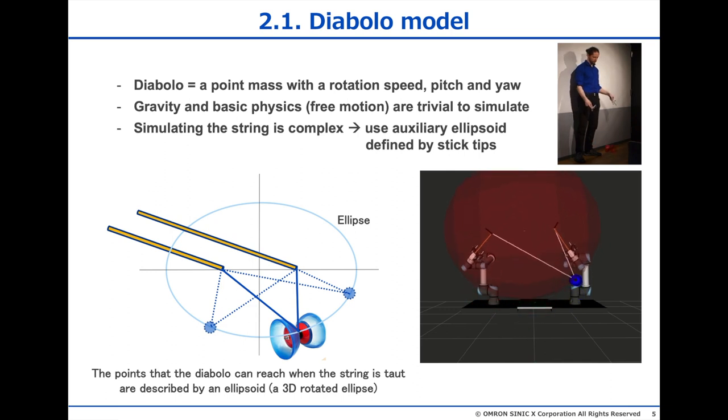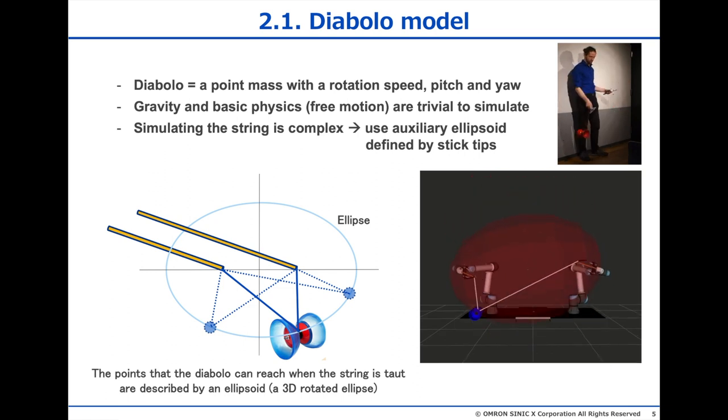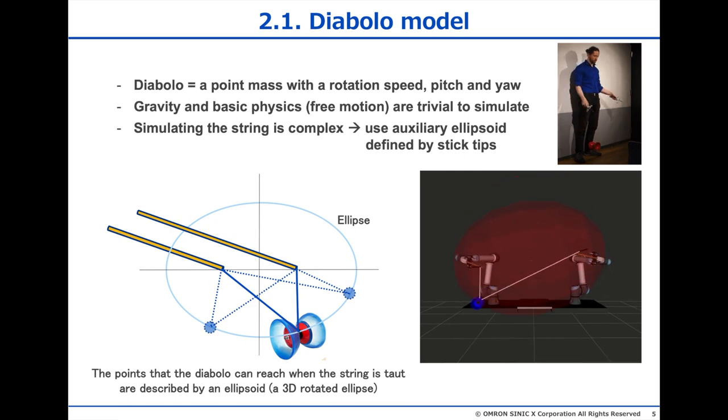When the string is taut, this ellipsoid describes all of the points which the Diabolo can reach, because the distance to the sticks adds up to just the string length. The ellipsoid is only defined by the position of the stick tips and the string length, and if you look at the video on the right, you can see how it changes shape as the stick tips move. All the interactions between the string and the Diabolo are expressed only in terms of this ellipse and the Diabolo center.